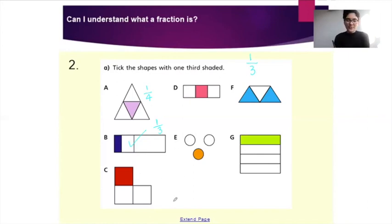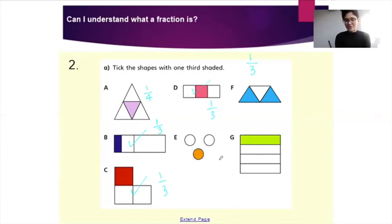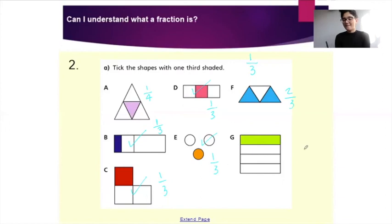Let's go on to C — it would be one out of three, because one part has been shaded out of a possible three parts, so that would also be ticked. Part D would be one out of three — one has been shaded and there are three parts in total, so this one would also be ticked. Part E — one out of three, so this would be ticked. Part F would be two out of three, because two parts have been shaded out of the total of three, so that would not be ticked. Part G — one part shaded, total of four, so not ticked as it's one out of four. In total, the shapes you should have ticked are B, C, D and E.